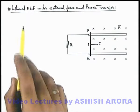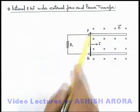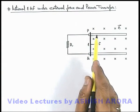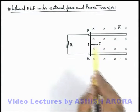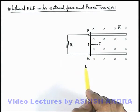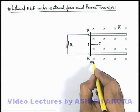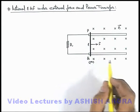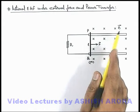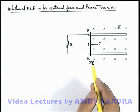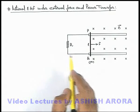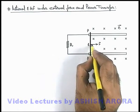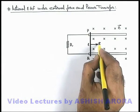Let us discuss motional EMF under external force and power transfer due to the force. We are given two smooth rails on which a rod PQ is placed. The mass of this rod is m, and the rails are in a uniform magnetic field induction B which exists in the inward direction. The two rails are connected with resistance R. At t equal to zero, a force F is applied to the rod.